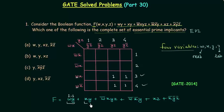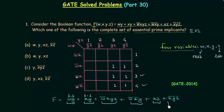We already had 1 in some of those cells, so there is no need to write 1 again. In the same way, we will fill the K-map using the third, fourth, fifth, and sixth product terms, and once you fill the K-map, it will look something like this.